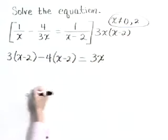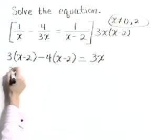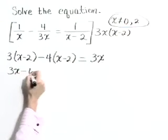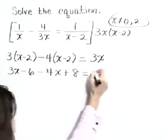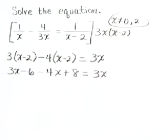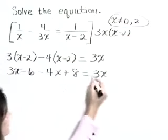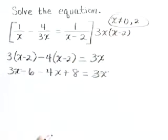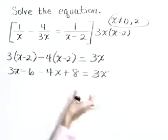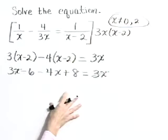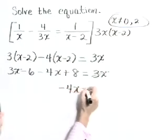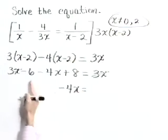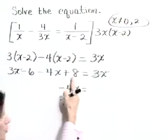Now let's solve this linear equation. Distributing, we have 3x minus 6 minus 4x plus 8 is equal to 3x. Notice here we have a 3x on both sides. So subtracting 3x from both sides causes those terms to disappear or fall out. Let's write this next step as negative 4x is equal to negative 6 plus 8 is 2.